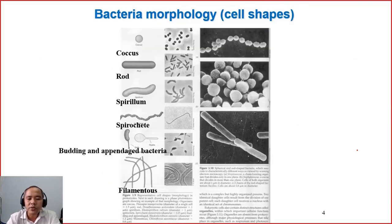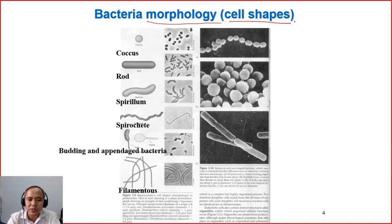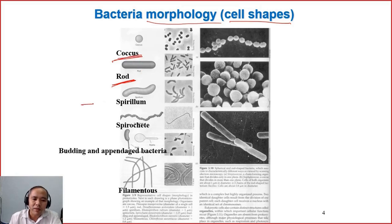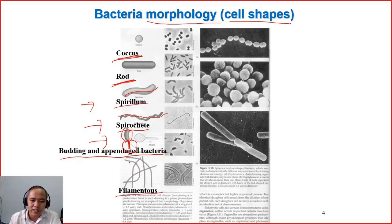Now we just have a short overview on bacteria. First, we look at morphology — the shape of the bacteria. Most bacteria occur in two shapes: the coccus and the rod. These are very common and we see them very often. But remember that bacteria can be in other shapes as well — spirillum, which is a little bit twisted, and spirochete which can be even further twisted. We also have budding and appendage bacteria, and filamentous bacteria that looks like hair.